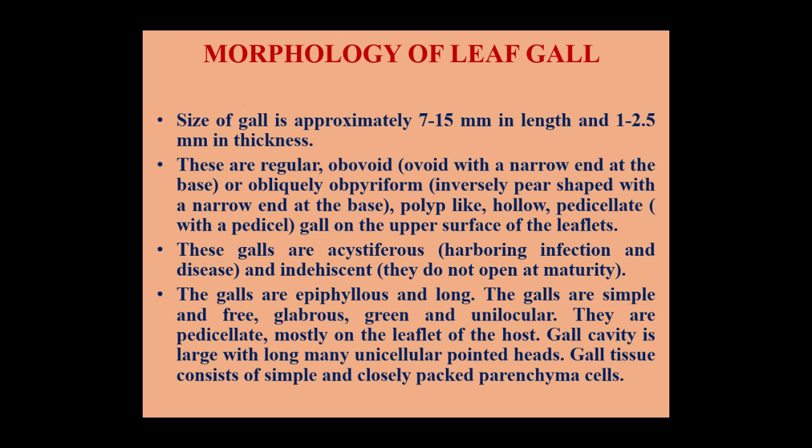These galls are epiphylous and long. The galls are simple and free, glabrous, green, and unilocular. As they have only one locule or chamber, they are pedicillate, mostly on the leaflet of the host. The gall cavity is large with long, many unicellular pointed hairs. The gall tissue consists of simple and closely packed parenchyma cells.